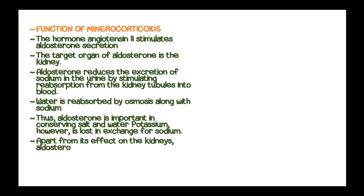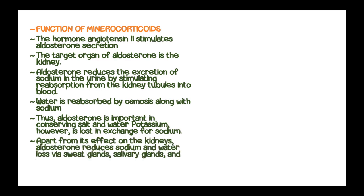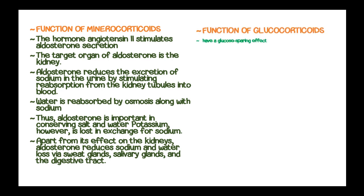Apart from its effect in the kidneys, aldosterone also reduces sodium and water loss via the sweat glands, salivary glands, and digestive glands. The corticosteroids have a glucose-sparing effect, achieved by adipose tissue breakdown and fatty acids released into the circulation, so they are used for metabolism in lieu of glucose.